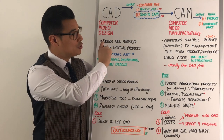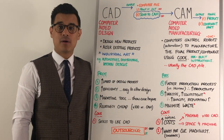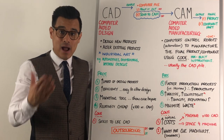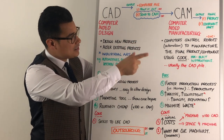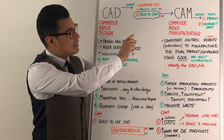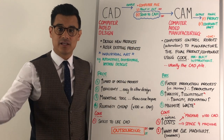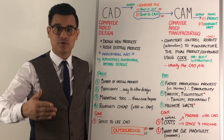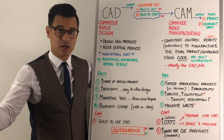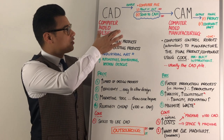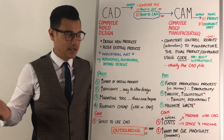So the CAD file is usually what's generating what the CAM makes. The output of computer-aided manufacturing is either the end product, or it could be a component, because several CAM processes might be needed to get to the final product. This combined process is sometimes referred to as CAD-CAM.